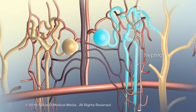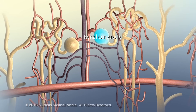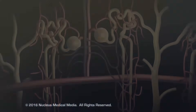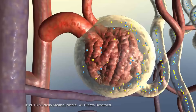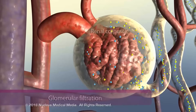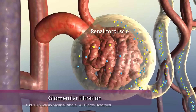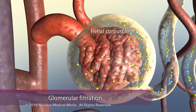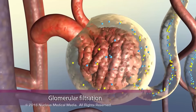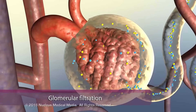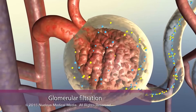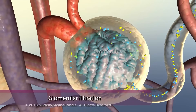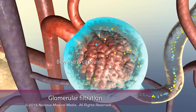Each nephron consists of a renal corpuscle and a renal tubule. The first step of urine production, called glomerular filtration, occurs in the renal corpuscle. It consists of a network of capillaries called the glomerulus, and Bowman's capsule.